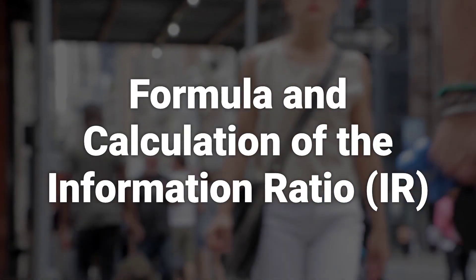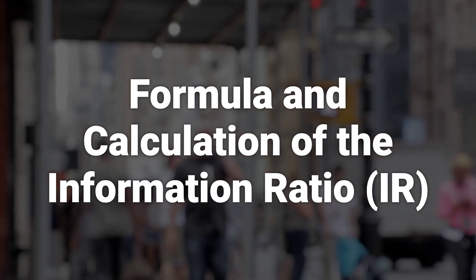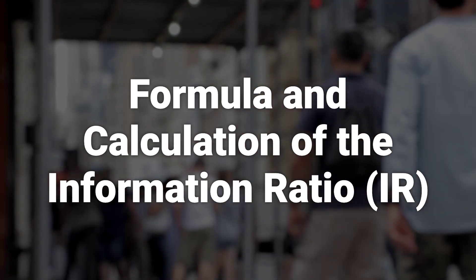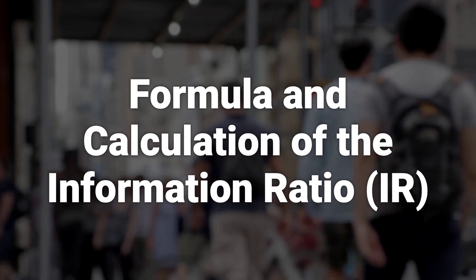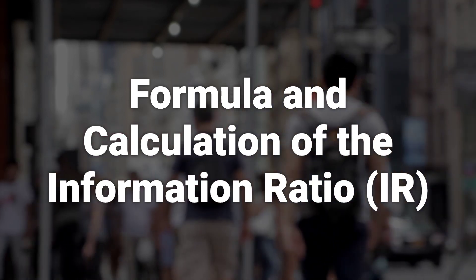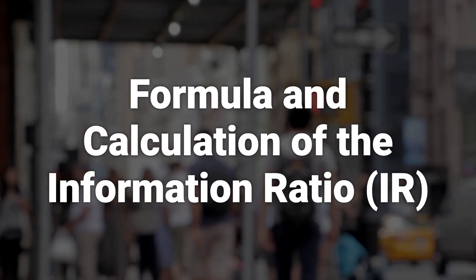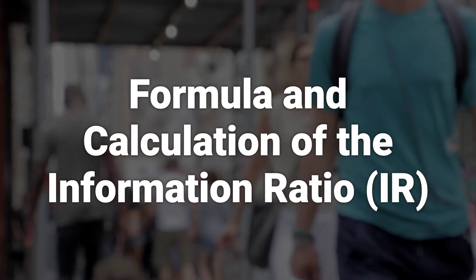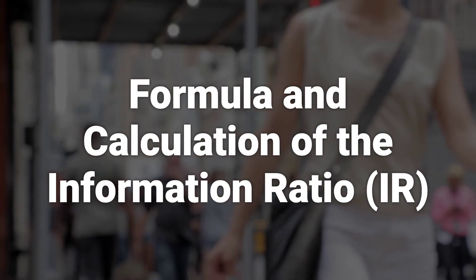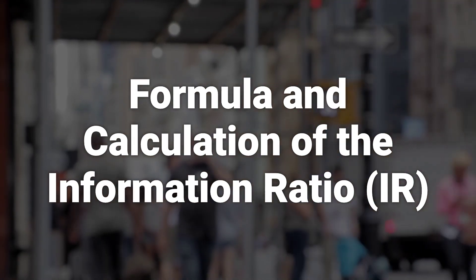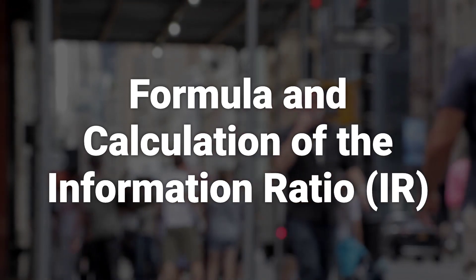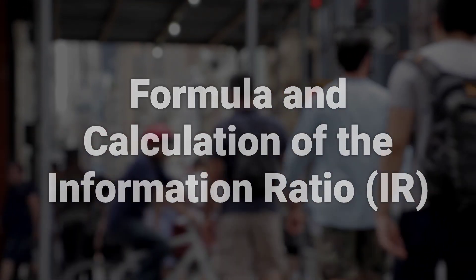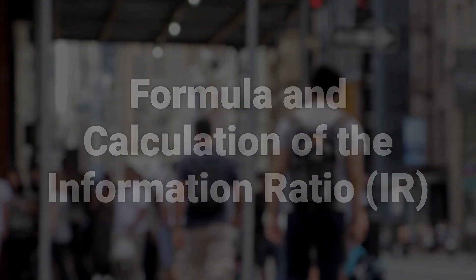The IR is calculated by dividing the difference in portfolio and benchmark performances by the tracking error. To calculate IR, subtract the portfolio return from the benchmark return and divide by the tracking error. This helps identify whether a portfolio is exceeding a benchmark index fund.